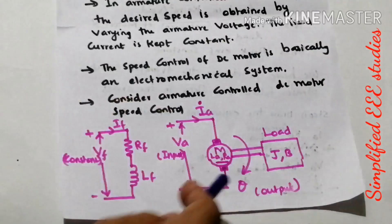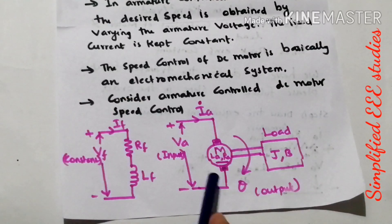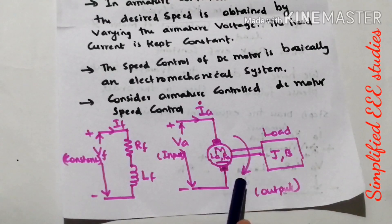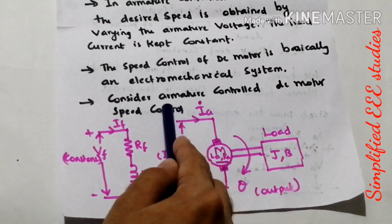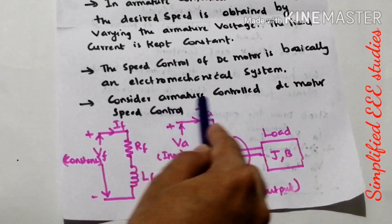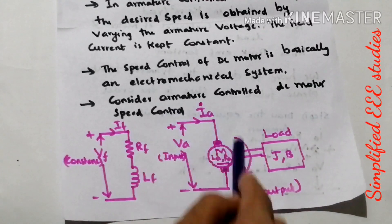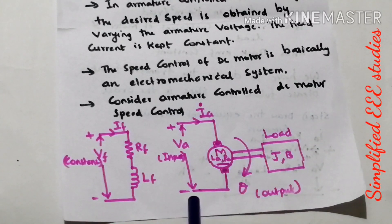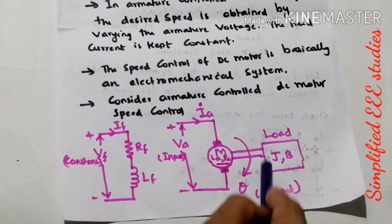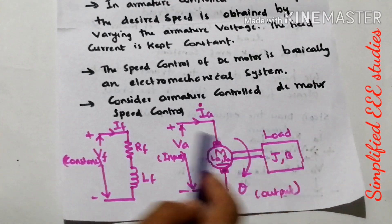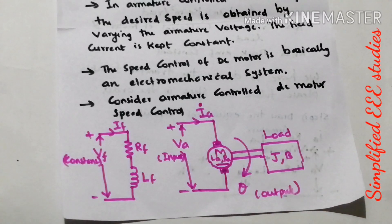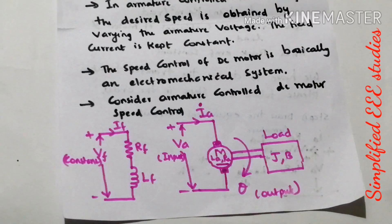So collectively we can say that this is an electromechanical system. It is having both an electrical part as well as a mechanical part. The electrical part you can observe here. Where the second segment related to load is actually the mechanical part. So we have to bifurcate the electrical part as well as the mechanical part.